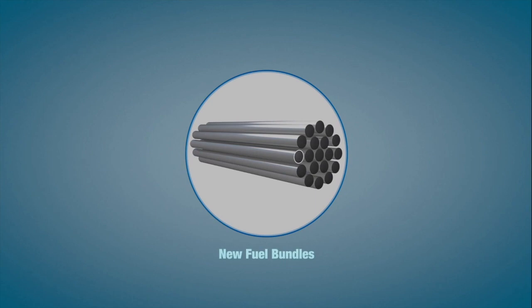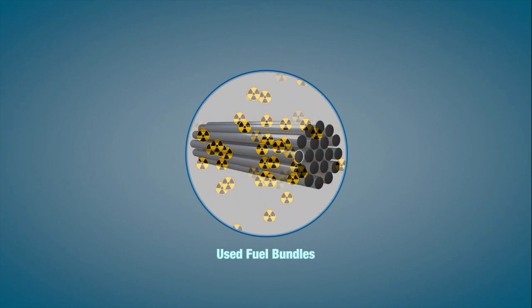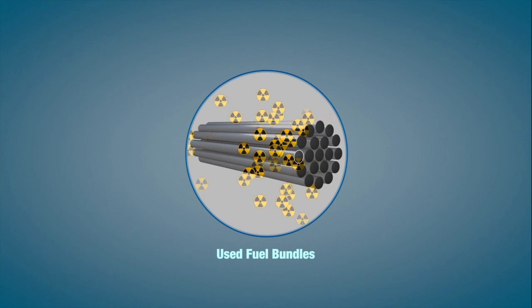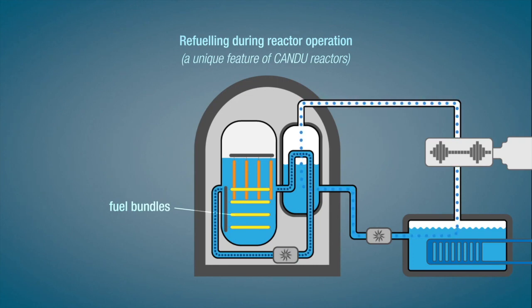New fuel bundles are completely safe to be handled and pose no risk. Only after being used in the fission process inside the reactor do they emit radiation. Fuel bundles can be exchanged inside the reactor while the power plant operates. This is done using robots and is a unique feature of the Canadian CANDU reactor design.